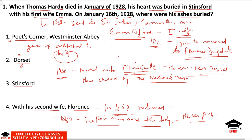Hardy remained at Maxgate for 40 years. The house was built according to his own design — since he was an architect, he designed it himself and named it Maxgate. This important fact is often asked in examinations: what was the name of his house? It was Maxgate. And who designed it? Hardy himself.